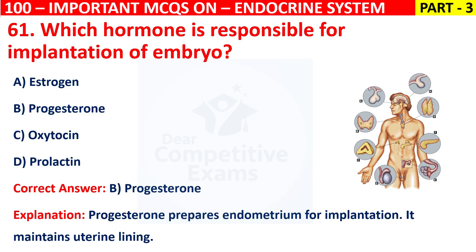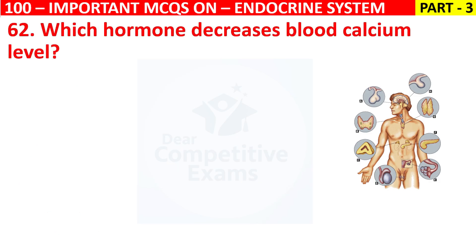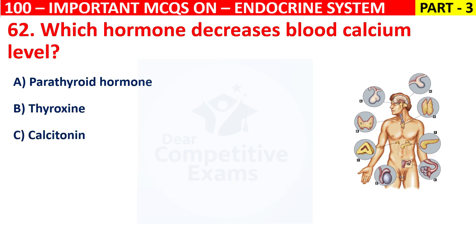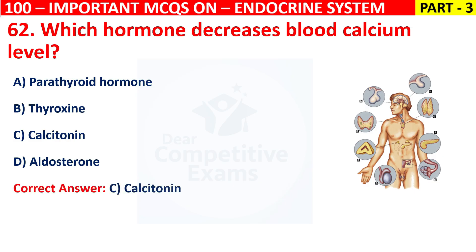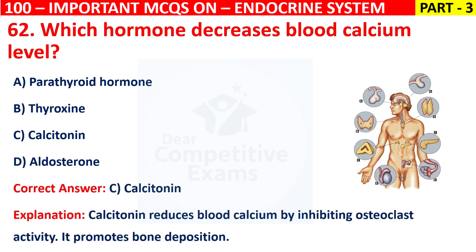Question 62: Which hormone decreases blood calcium levels? Your options are Parathyroid hormone, Thyroxin, Calcitonin, or Aldosterone. The correct answer is C, that is Calcitonin. Calcitonin reduces blood calcium by inhibiting osteoclast activity.